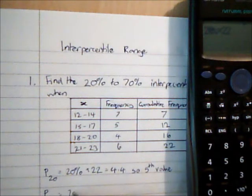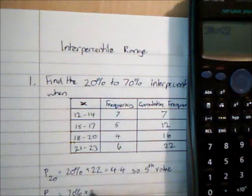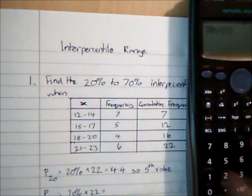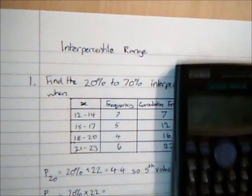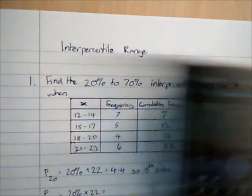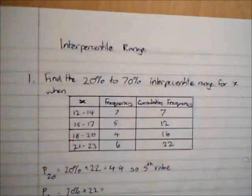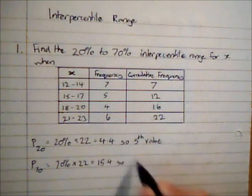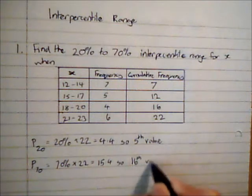Then P70 is going to be 70% of 22, and that is giving me a value of 15.4. So that indicates I am going to take the 16th value.